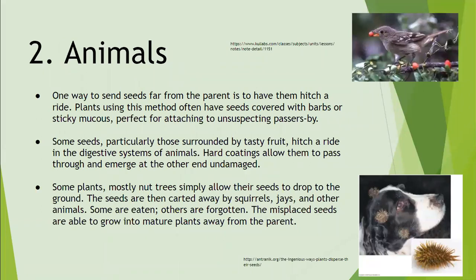Next is by animals. One way for a seed to move far away from the parent is to have it hitch a ride on an animal. Plants that use this method often have seeds covered with barbs or sticky mucus, perfect for attaching to unsuspecting passersby. Some seeds, particularly those surrounded by tasty fruit, hitch a ride in the digestive system of animals. The hard coating of the seed allows them to pass through the digestive system and emerge undamaged.